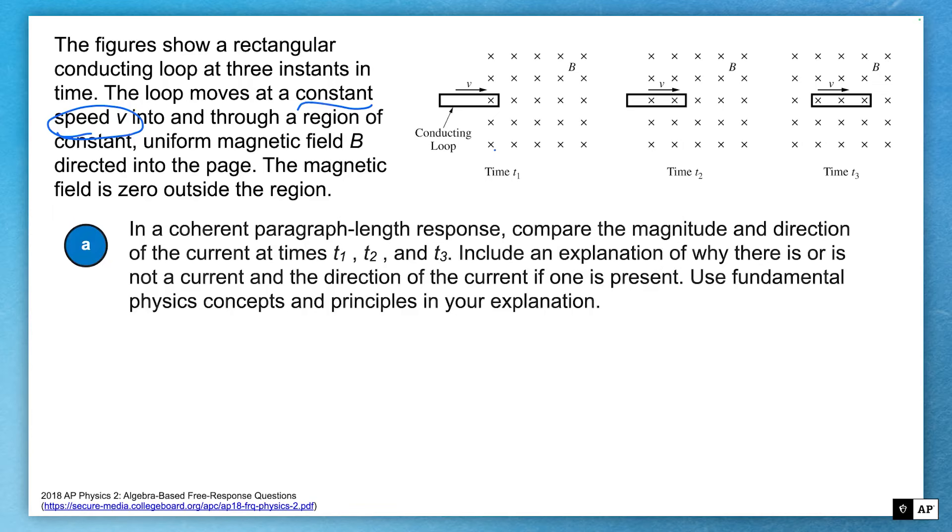And the question says, compare the magnitude and direction. They ask you two things of the current at times T1, T2, and T3. Include an explanation of why there is or is not a current and the direction of the current if one is present. And then of course, cite physics principles to support your answer. So they've kind of given you a list of things to say. What's the current at time one? What's the current at time two? What's the current at time three? And they're just comparing the magnitudes. Which one's the biggest? Which one's the smallest? Is there any of them that are zero if there's not a current? And what's the direction at each of those points if there is current in my conducting loop?